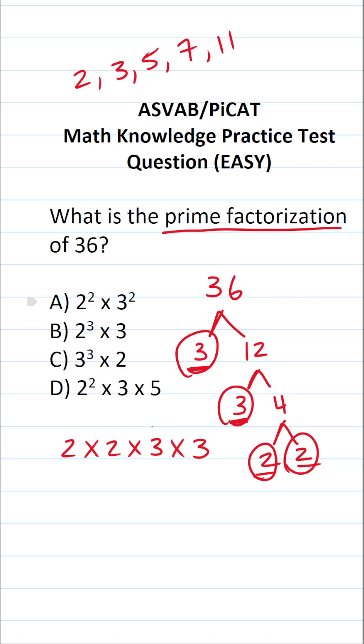Now this isn't an answer choice because we can actually simplify this by rewriting it using exponents. 2 times 2 is the same thing as 2 squared times 3 times 3 is the same thing as 3 squared. So the answer to this one is A.